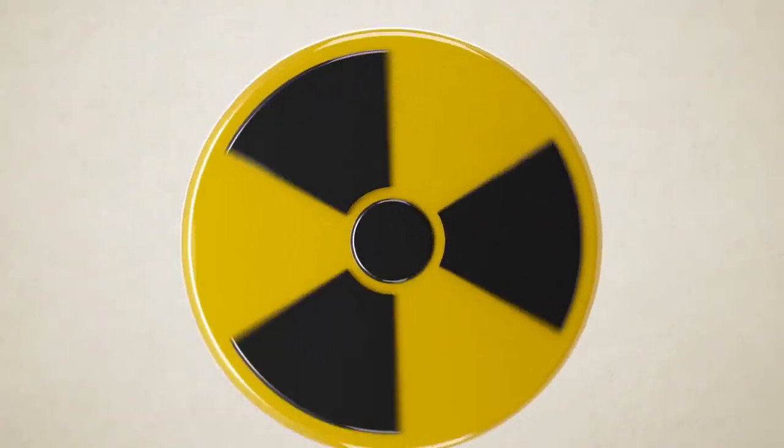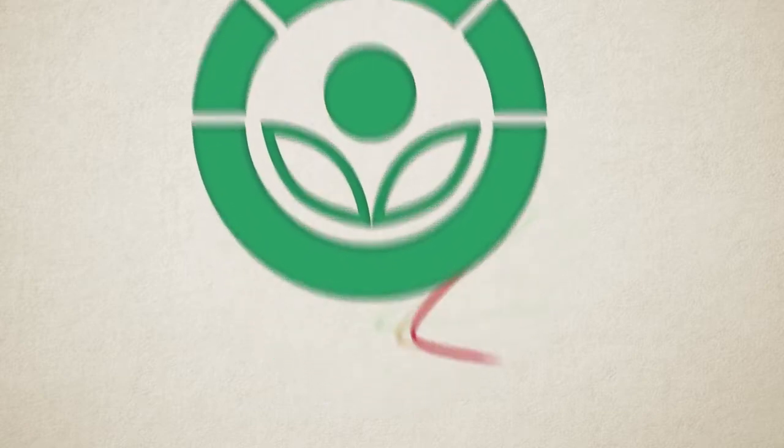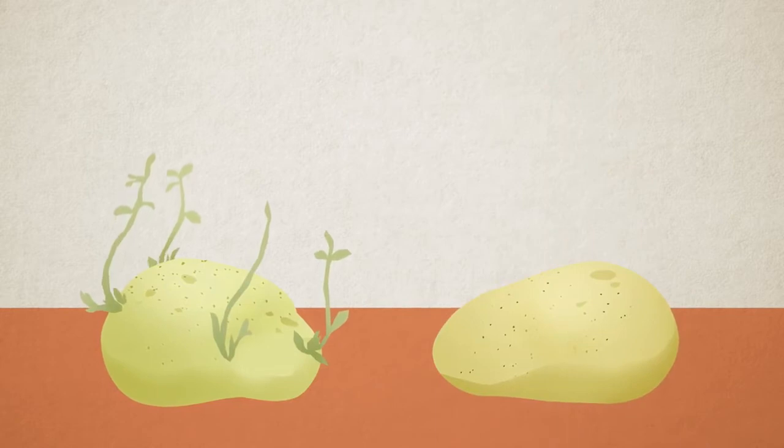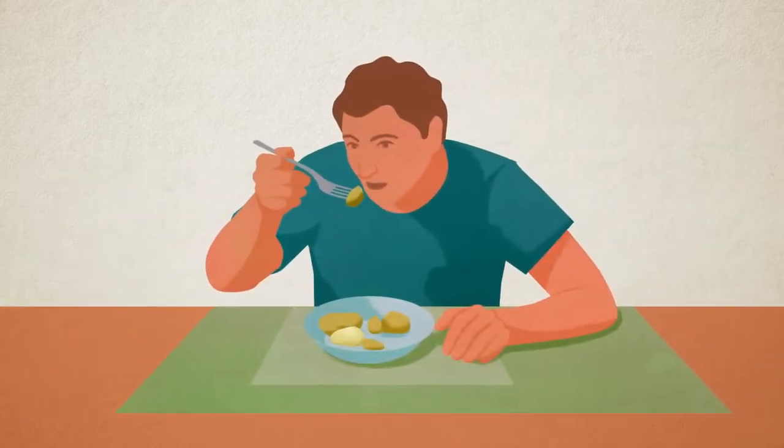Irradiation using X-rays and gamma rays can also be used to treat food. By choosing the right wavelength and dosage, these rays can prevent sprouting of vegetables like potatoes, maintain their freshness and taste.